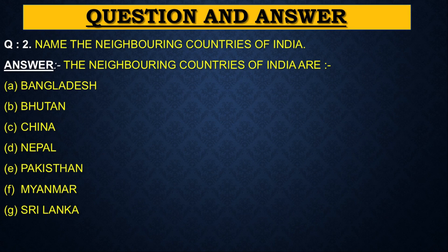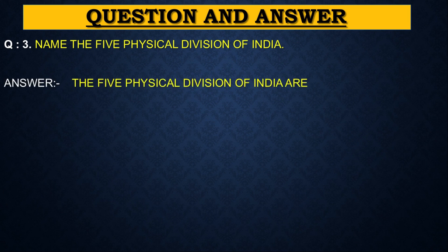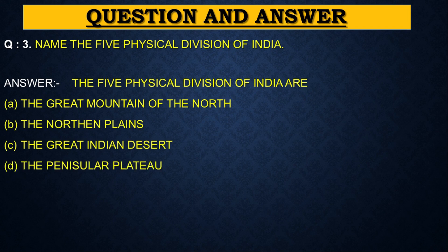This is the last question of question and answer. Name the five physical divisions of India. Answer: The five physical divisions of India are: first, the great mountains of the north; second, the northern plains; third, the great Indian desert; fourth, the peninsular plateau; fifth, coastal plains and islands.